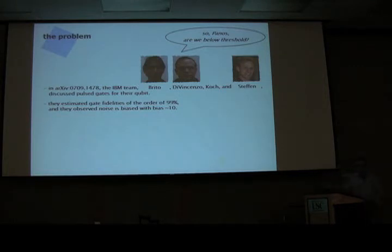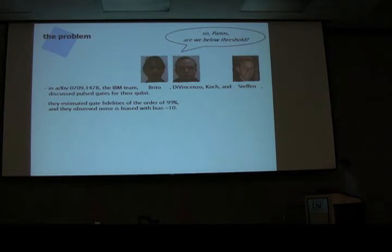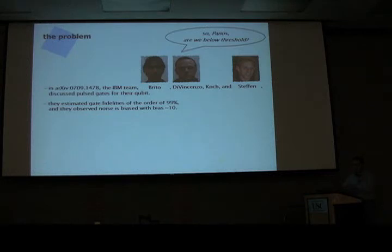When I asked how biased the noise is, they told me it's about 10 — meaning sigma-X errors are less likely than sigma-Z errors. They are in a region of parameter space where by changing their gates slightly, making them longer with bias very small, they can increase the bias by orders of magnitude.